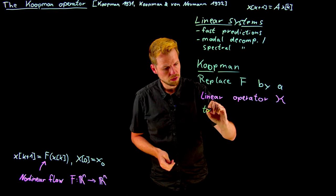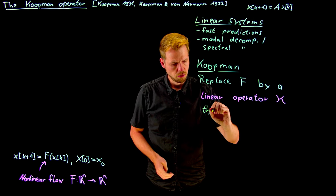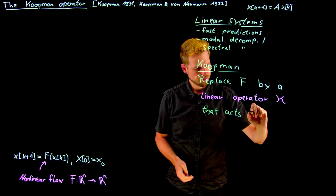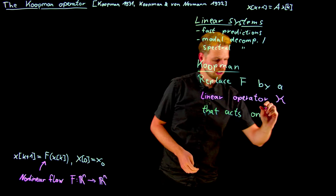And what we need to do is, we need to define a new space that this operator acts on. So what we want to do is, we want it to act on what's called observable functions.